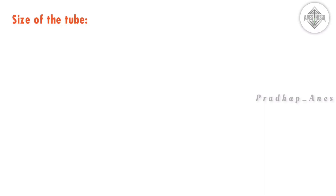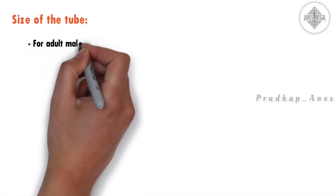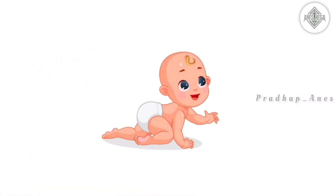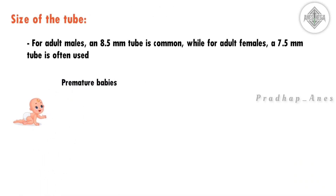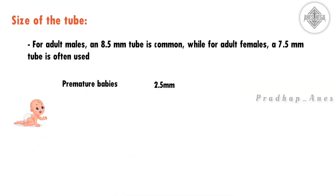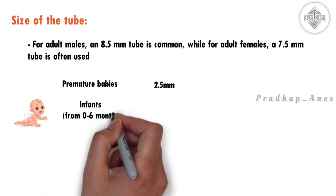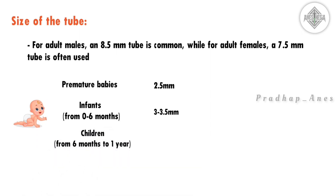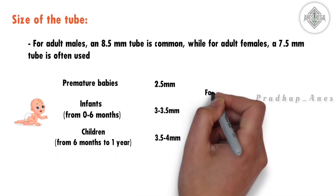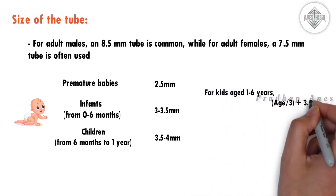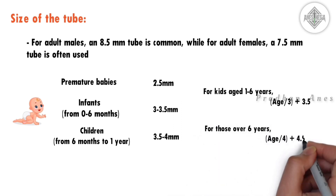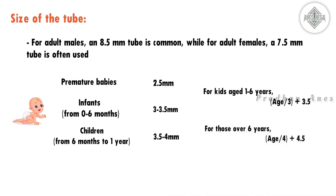Choosing the right endotracheal tube size is important for patient safety. For adult males, an 8.5 mm tube is common, while for adult females a 7.5 mm tube is often used. Children's sizes vary: premature babies typically need a size 2.5 tube; infants 0–6 months may use 3–3.5; those aged 6 months to 1 year may require 3.5–4. For kids aged 1 to 6 years, the formula is (age ÷ 3) + 3.5, and for those over 6 years it is (age ÷ 4) + 4.5.